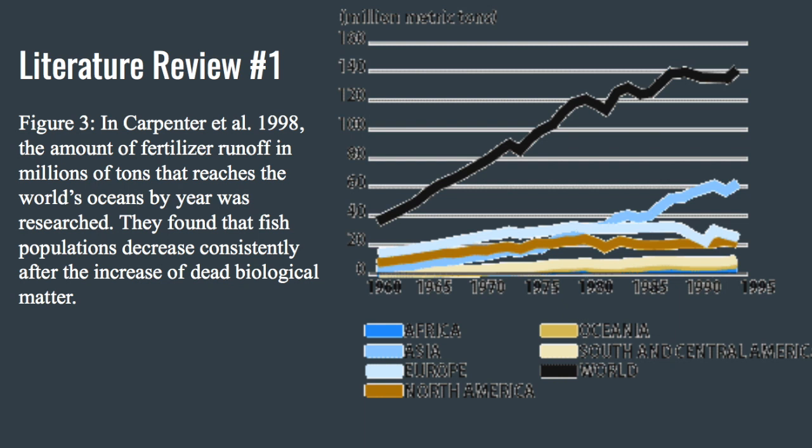Carpenter et al. found that the cyanobacteria that died after the algae bloom were the main food source for the resulting types of bacteria that fed on the dead cyanobacteria, or the dead algae. Cyanobacteria are the main type of bacteria that thrive during an algae bloom, mainly because they are photosynthetic organisms that also feed off of the nitrates and phosphates.